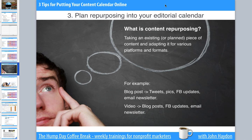The third tip is to plan repurposing into your editorial calendar. What is content repurposing? Basically, it's taking an existing or planned piece of content and adapting it for various platforms and formats — like email, Twitter, and so forth. This is really important because you have limited time, and it also helps you focus on the story rather than the content itself. Let me show you a couple of examples.